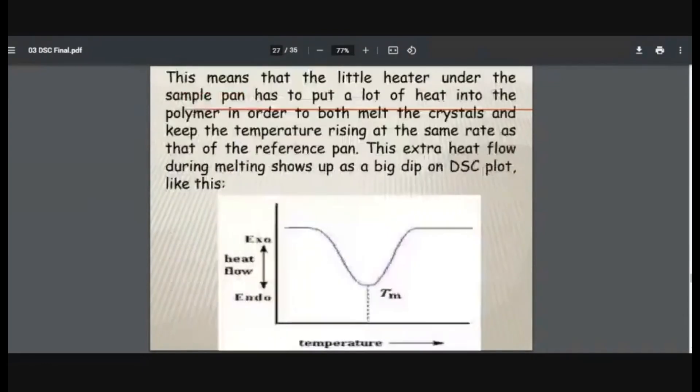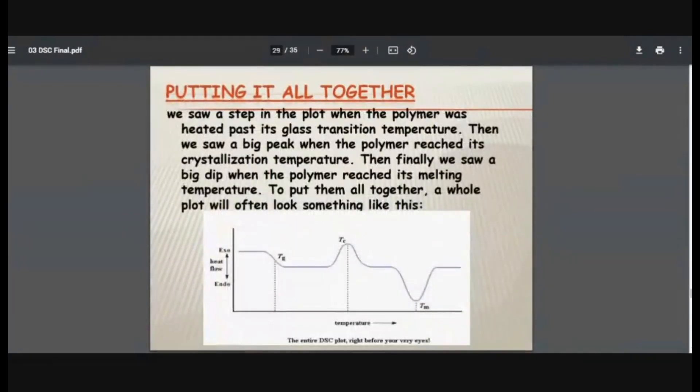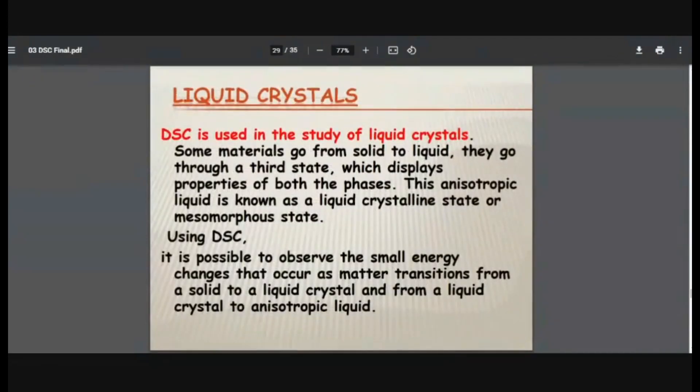Then we can - the next application is melting. You can determine melting. So there is something called as liquid crystals. That is, in liquids there is orderly arrangement of the molecule. Some materials go from solid to liquid, they go through a third state which displays properties of both solid and liquids. This anisotropic liquid is known as liquid crystalline state or mesomorphous state. Using DSC, it is possible to observe the small energy changes that occur as matter transitions from a solid to a liquid crystal, and from a liquid crystal to anisotropic liquid.